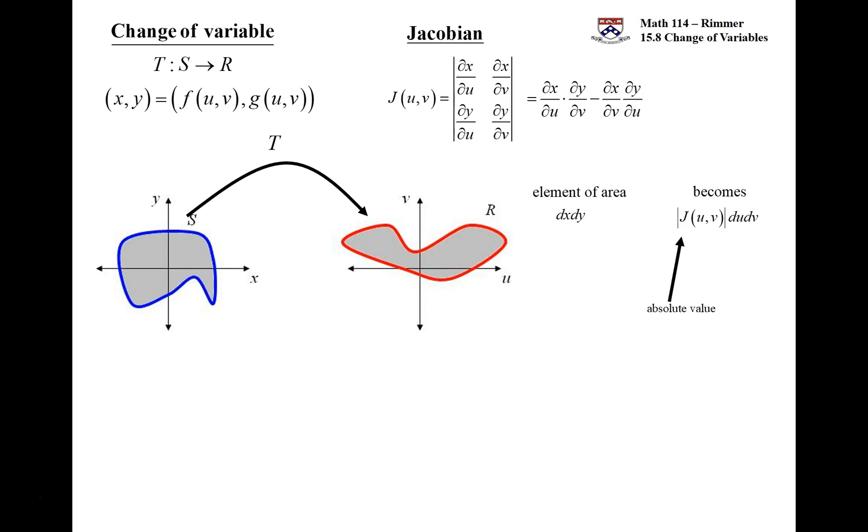So when it's time to change dA, an element of area in XY space is called dx dy but in UV space you can't just switch it to du dv. There's the amplification factor called the Jacobian and we take the absolute value of that Jacobian.